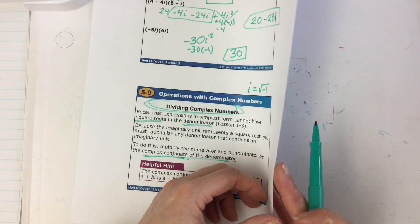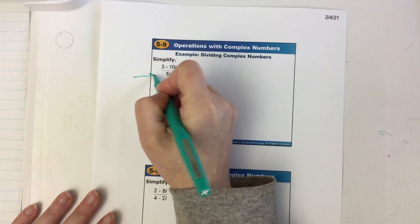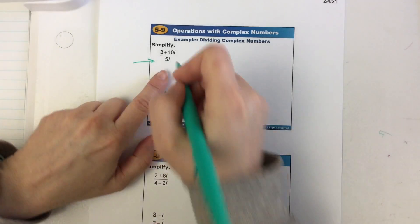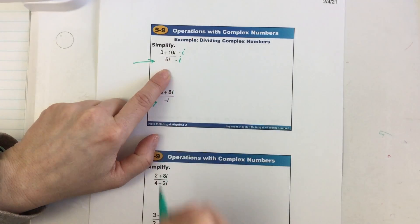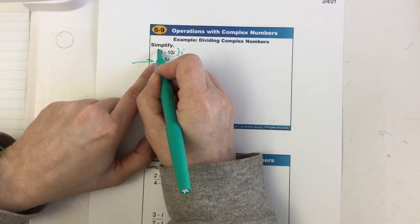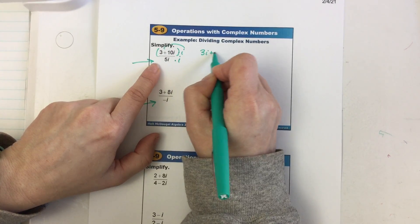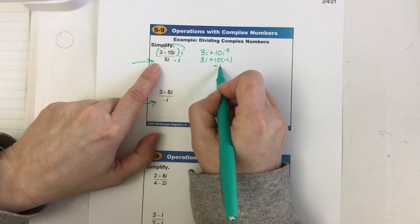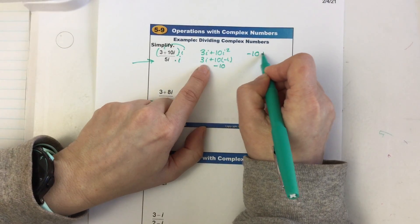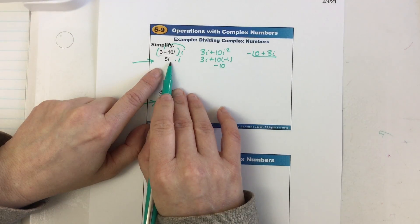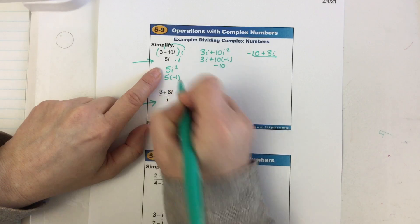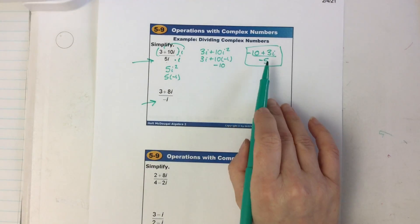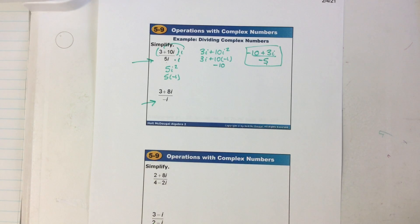If you just have a single term on the bottom — a monomial — in order to cancel the i, we just multiply top and bottom by i. On the top, it's two terms times one term, so we distribute: 3i plus 10i squared. Well, i squared is really negative one, so this becomes negative 10. The new numerator is negative 10 + 3i. The bottom: 5i times i is 5i squared; i squared becomes negative one; five times negative one is negative five. You no longer have an i on the bottom, which means no square root in the denominator.